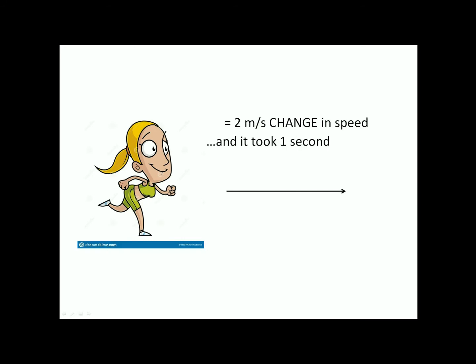So that change in speed took just 1 second. So that means the 2 meters per second change in speed happened per second, which you can write in short form over here on the bottom. Where am I going with this? Well, this is basically what acceleration is.